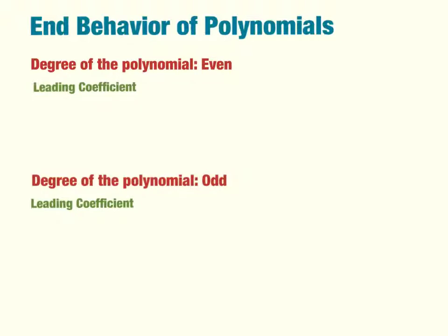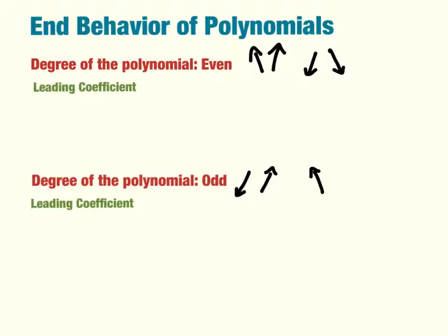If the degree of the polynomial is even — like x squared, x to the fourth, x to the sixth — we have two options: both arrows will end going up, or they'll both end going down. If the degree of the polynomial is odd, then they'll end in different directions: either it'll start by going down and end going up, or it'll start up and end in a down direction.